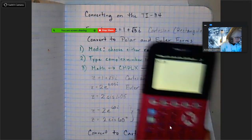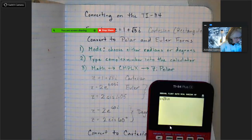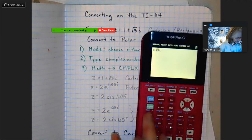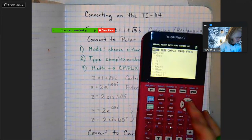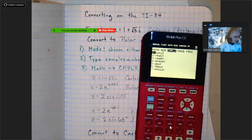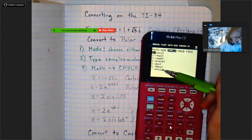Now I have my number in there. I am now going to go to Math, so here is the Math button right here. Math, and I'm going to choose complex.